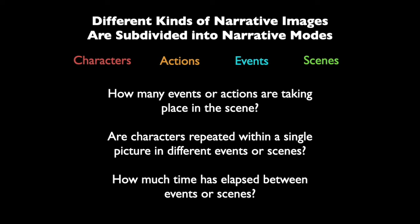The different kinds of narrative images have these narrative modes, and the modes are really defined by characters, actions, events, and scenes. Those are the kinds of things we're looking for when we try to understand the mode. What kinds of characters are there? Are characters repeated? What kinds of actions are happening? Who is acting and who is not? How many events are there — just one or multiple? And how many scenes — just one backdrop or multiple backdrops?